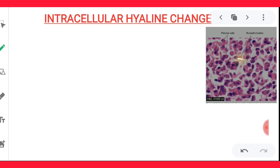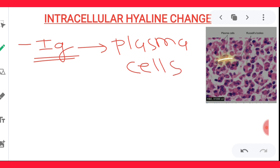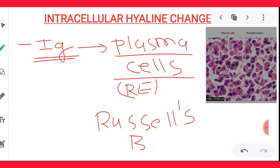The first example of intracellular hyaline change is the Russell body, seen in multiple myeloma. In plasma cell dyscrasia, especially multiple myeloma, there is excessive immunoglobulin production. These immunoglobulins get deposited within the plasma cell — particularly within the rough endoplasmic reticulum — and will look pink, eosinophilic, and homogeneous. This deposition of immunoglobulin within the plasma cell is known as the Russell body, an example of intracellular hyaline material deposition. You can see this in the diagram.